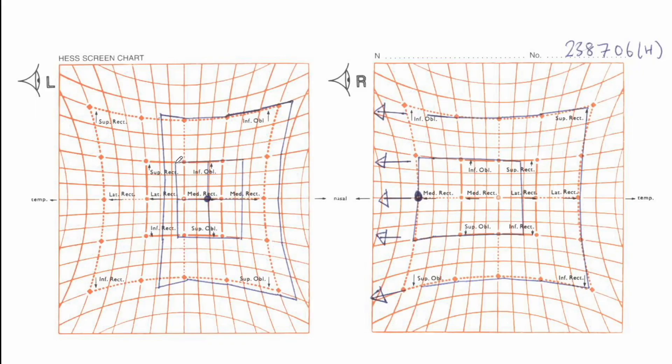In the previous video we looked at the basic principles of interpreting the Hess chart. Now we are going to look at different muscle paralysis examples and see how to interpret a Hess chart in those muscle paralysis cases.